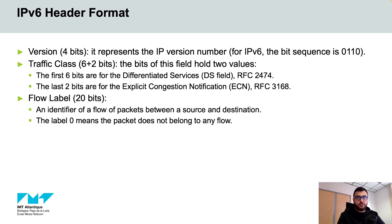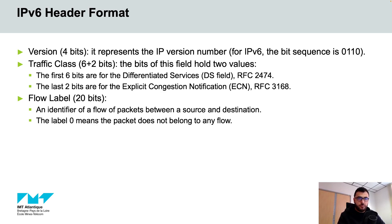Next we have the flow label, which is a 20-bit field and it is used as an identifier by a source node to label the IPv6 packets that belong to the same flow — for example, a voice over IPv6 application or TCP session — to request special treatment by intermediate IPv6 nodes.